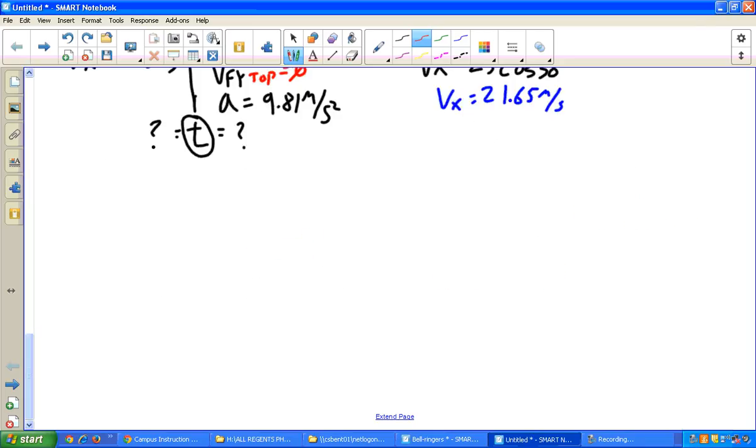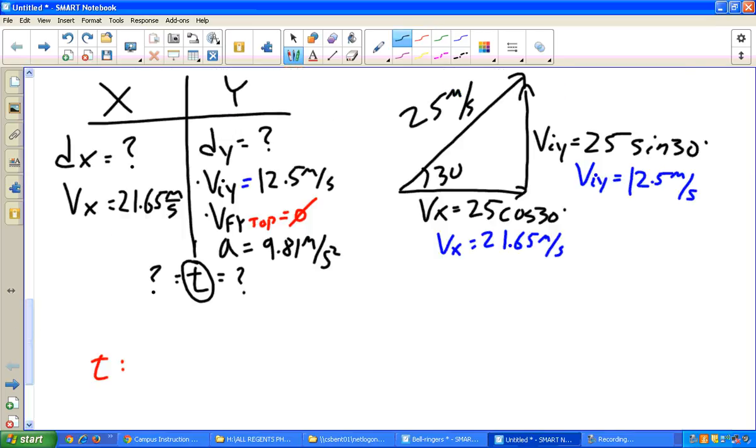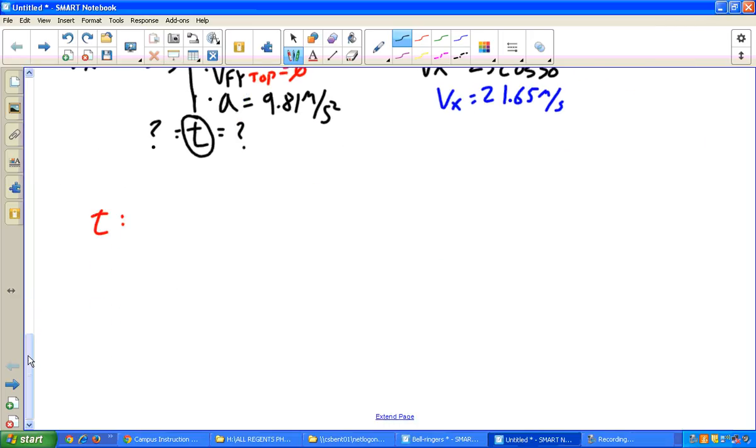So let's go ahead and solve for time. I know I have Vfy, I have Viy, I have acceleration, I'm solving for time. The correct equation to choose is Vf equals Vi plus At.